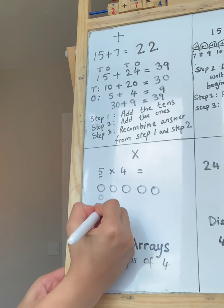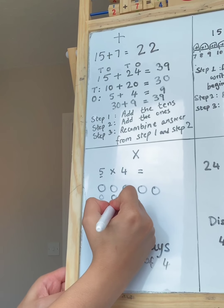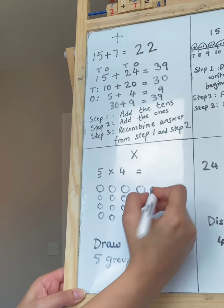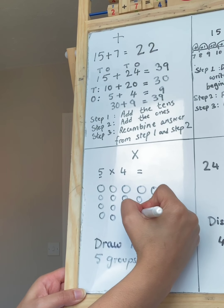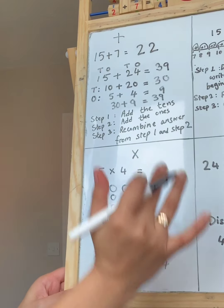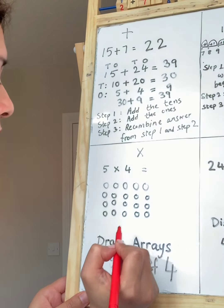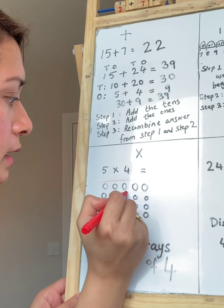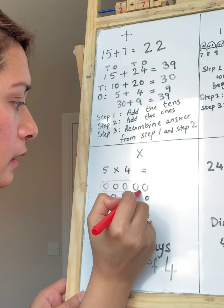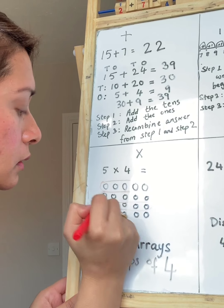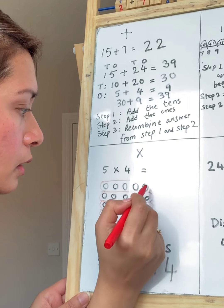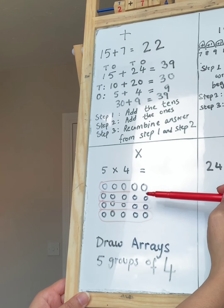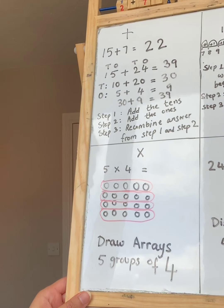So 1, 2, 3, 4. That's 1 group. 3, 4, 2 groups. 3, 4, 3 groups. 5 groups of 4. So that's the first group of 5. Another one. Another. 5 groups of 1, 2, 3, 4. You know how to count in 5s. So we go 5, 10, 15, 20. And we write our answer.